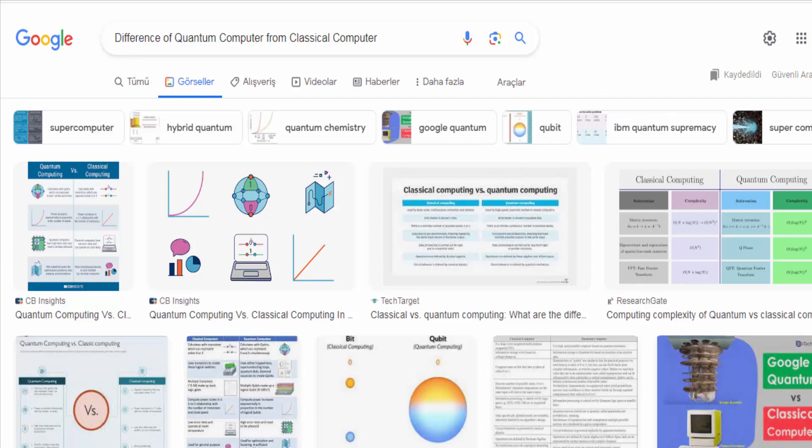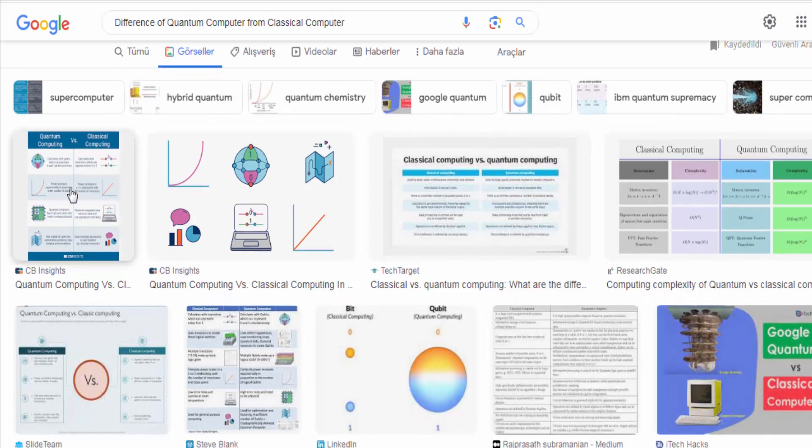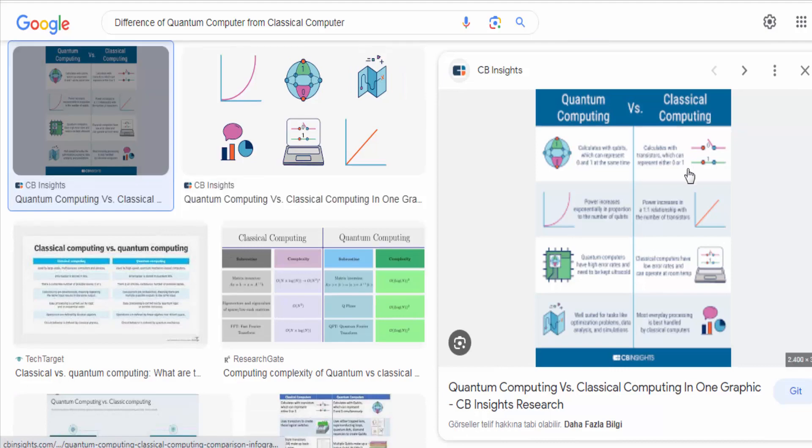Quantum computers are fundamentally different from classical computers in several key aspects. Here are the main differences: representation of information.